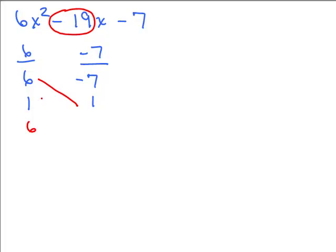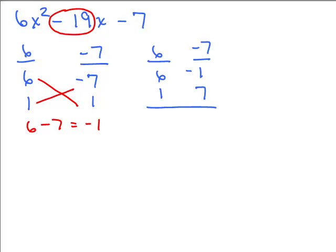We crisscross that — 6 times that gives negative 7, that gives a middle term of negative 1. That does not check because we need it to be negative 19. Let's see if we switched where the 7 was: we've got 6 and 1, we'll keep them the same but put the 1 up here and the 7 here, and you could put the negative in either place to try it out. We do the crisscross: that's 42 and that's minus 1, and that's 41. That didn't work either — still not the right combination.